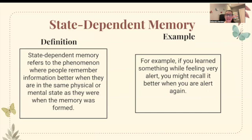State-dependent memory. State-dependent memory refers to the phenomenon where people remember information better when they're in the same physical or mental state as they were when the memory was formed. For example, if you learn something while feeling very alert, you might recall it better when you're also alert. Whatever state you're in when you are learning the information — if you can replicate that — will improve your recall.